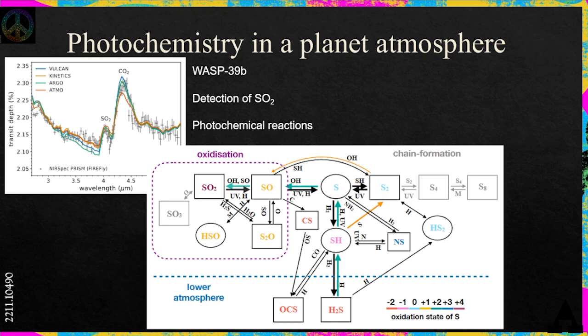Very soon a new European satellite ARIEL will be launched, specifically dedicated to studies of exoplanet atmospheres. In my opinion all these studies will push significantly the whole area of atmospheric physics, bring more talented young researchers to the field, and produce lots of codes modeling evolution of atmospheres and their properties. That's why I decided to choose this particular result from the James Webb telescope to discuss it in some detail.